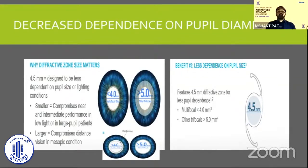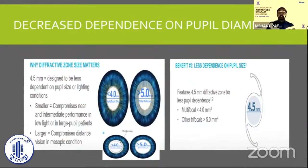With a diffractive area of 4.6 mm, even in mesopic conditions when the pupil dilates to 4.6 mm, near vision remains excellent. In really dark conditions — driving at night when the pupil reaches about 5 mm or more — the peripheral refractive part comes into play and provides very good distance vision. So it is a kind of tailor-made pupil dependence: the IOL adapts to the pupil size and visual requirement, essentially providing pupil independence across conditions.